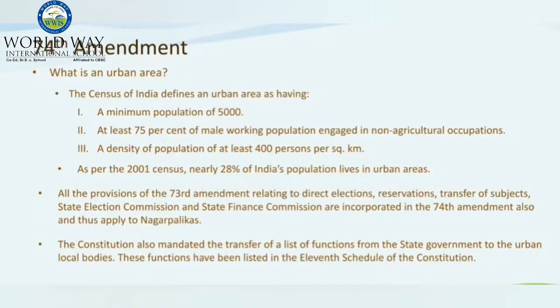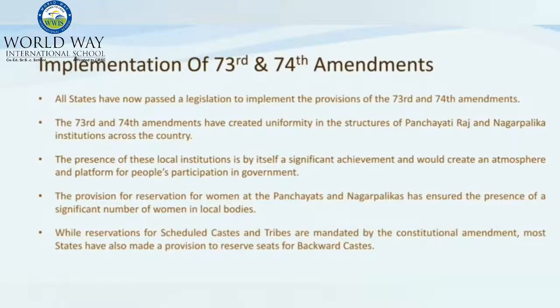The Census of India defines an urban area as having a minimum population of 5,000 and at least 75% of male working population engaged in non-agricultural activities. As per the 2001 census, nearly 28% of India's population lives in urban areas. As a provision similar to the 73rd amendment for rural areas, the 74th amendment created uniformity in the structure of Panchayati Raj and Nagarpalika institutions across the country. The presence of these local institutions is a significant achievement and creates an atmosphere and platform for people's participation in the growth of local government in India.